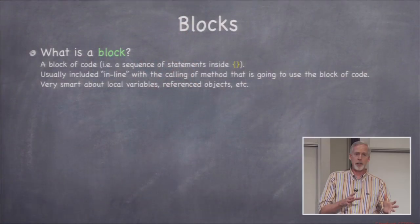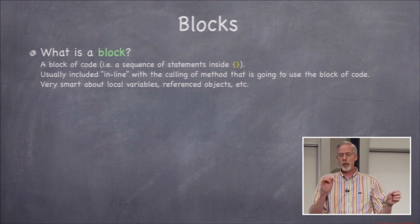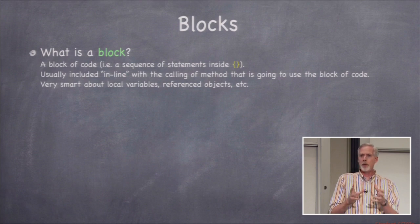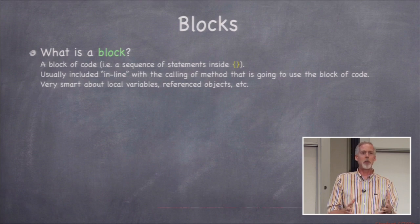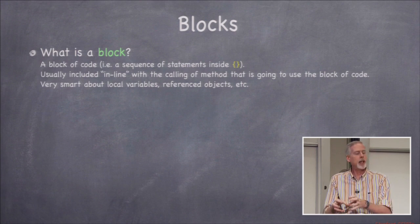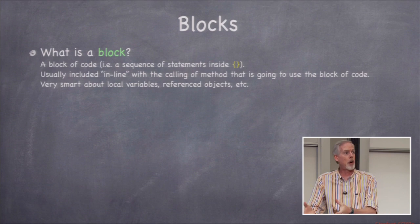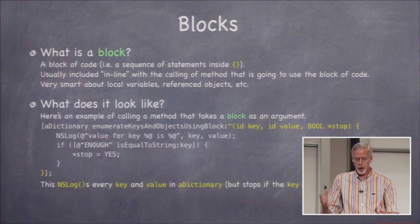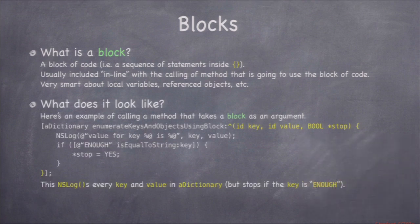The second Objective-C thing is blocks. Blocks are used throughout iOS — I sometimes have difficulty getting to week five without talking about blocks because they're so prevalent in the API. A block is a block of code, but it's a block of code that can be embedded inside other code, passed as an argument, or stored in an array. Here's an example: NSDictionary has a real method called enumerateKeysAndObjectsUsingBlock. The argument is a block with no return value that takes three arguments — two IDs for the key and value, and a bool star as an outgoing parameter.